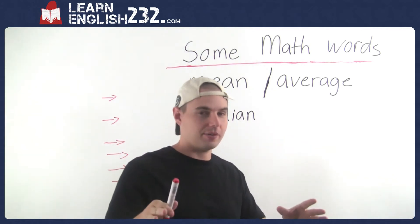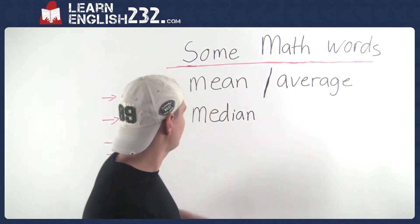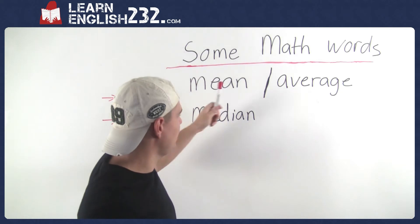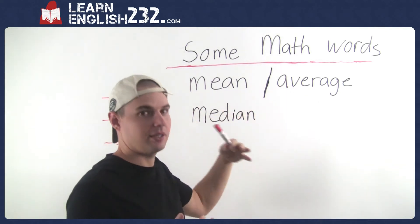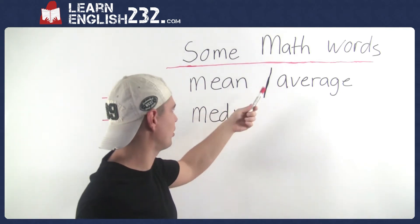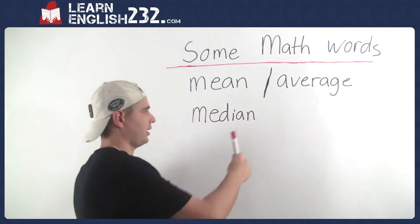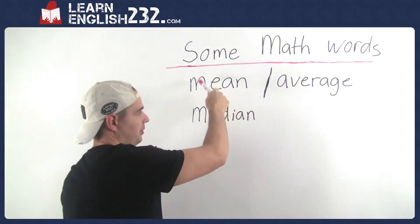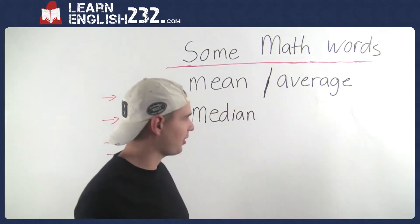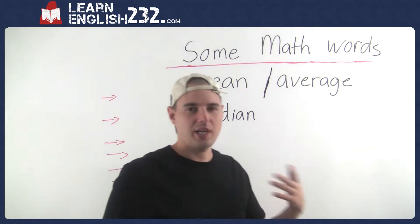So you guys are going to know more, I'm telling you, than some native speakers after this. Anyway, so mean and average mean the same thing. Obviously the word mean can mean a lot of things, but in this case average and mean mean the exact same thing. That is, if you take a group of numbers and you average them together, then it's sort of in the middle of all the numbers.